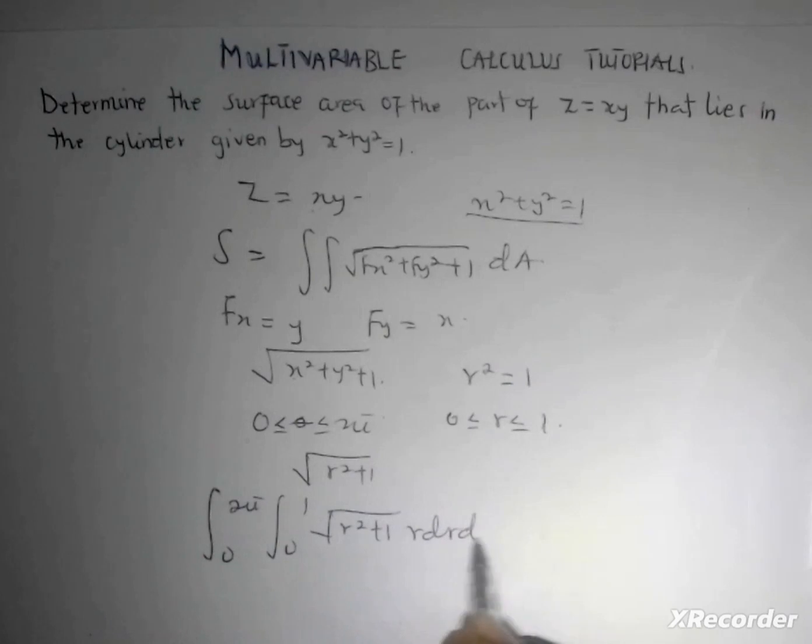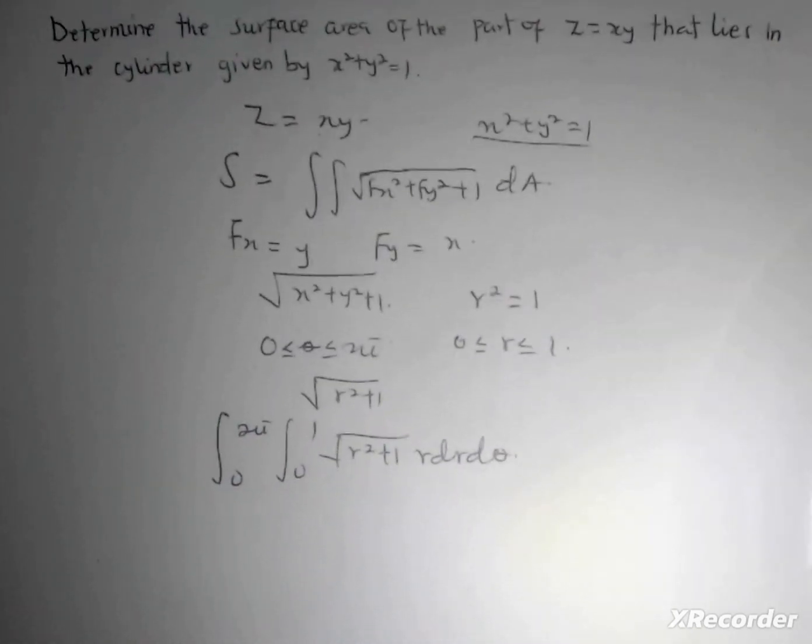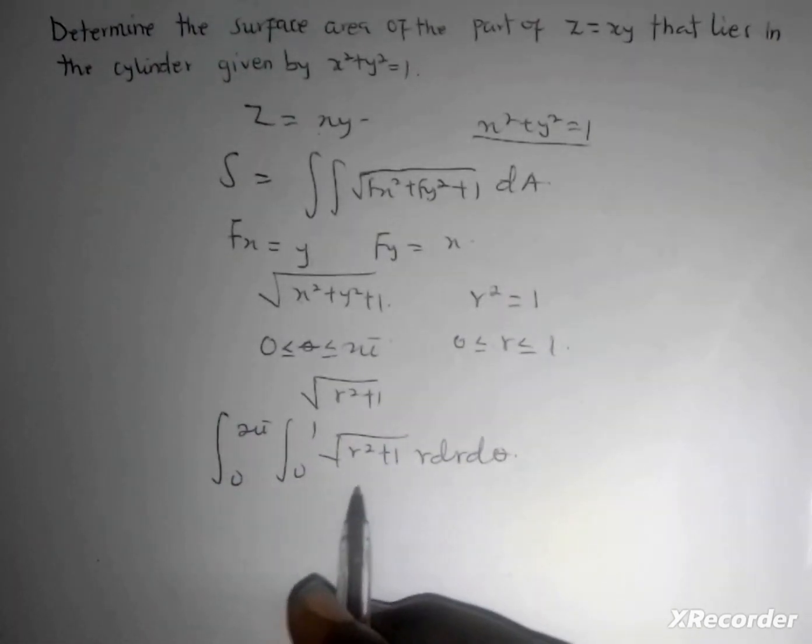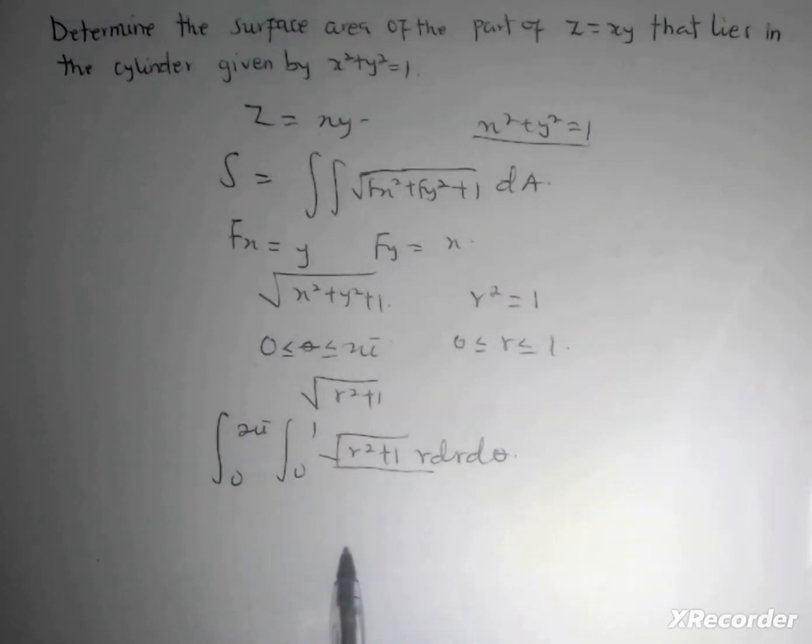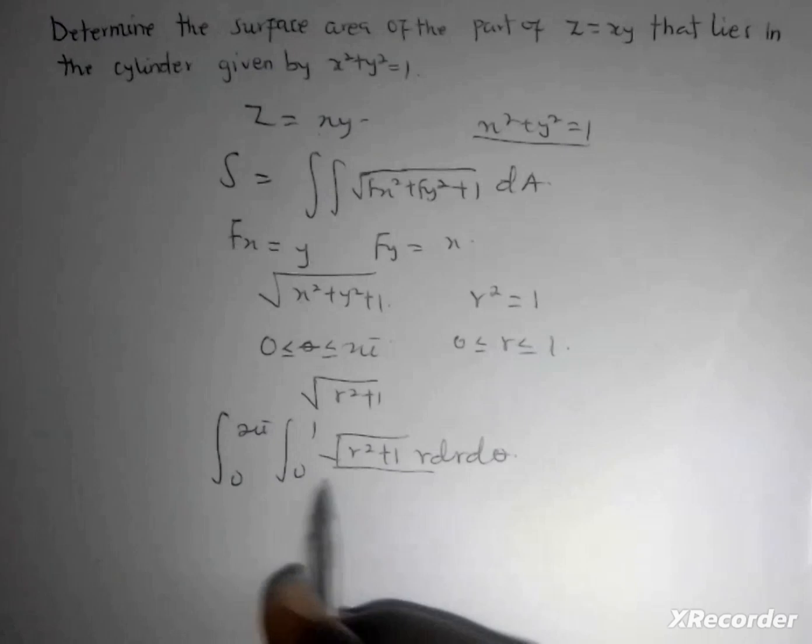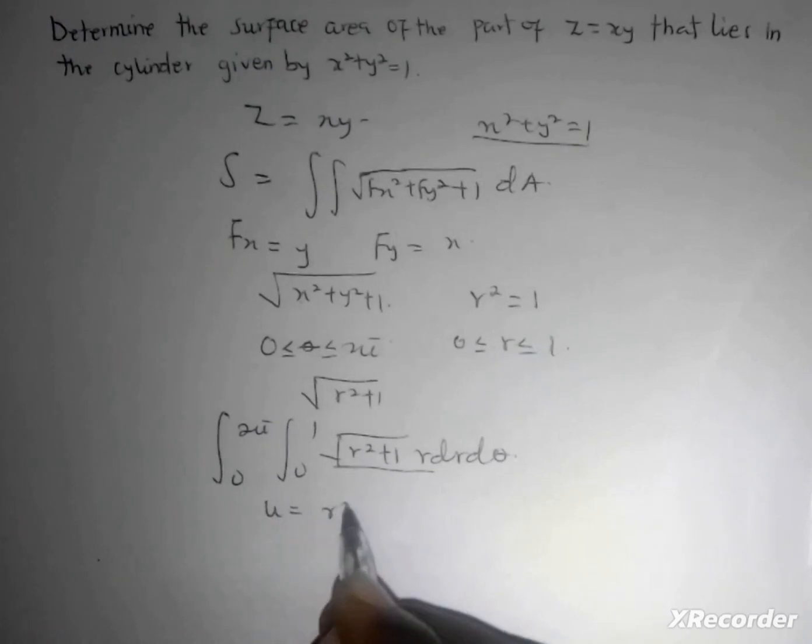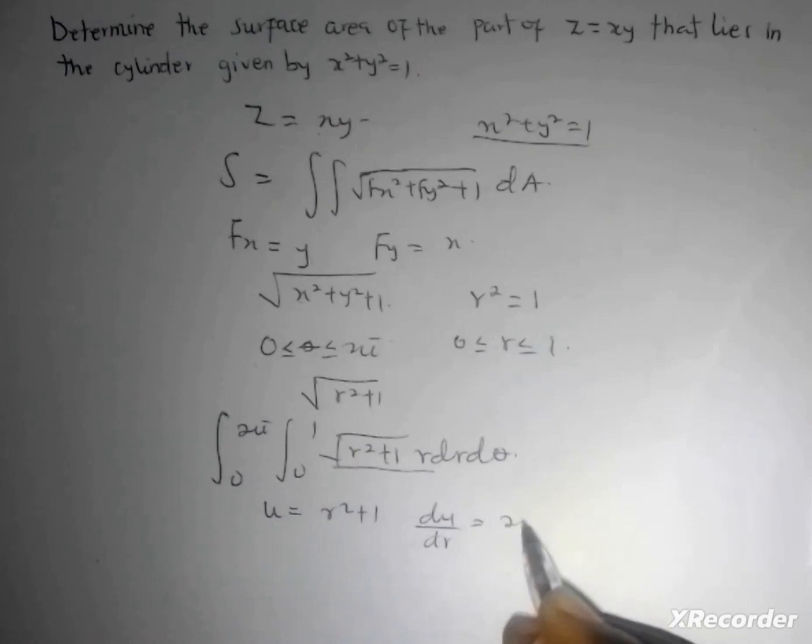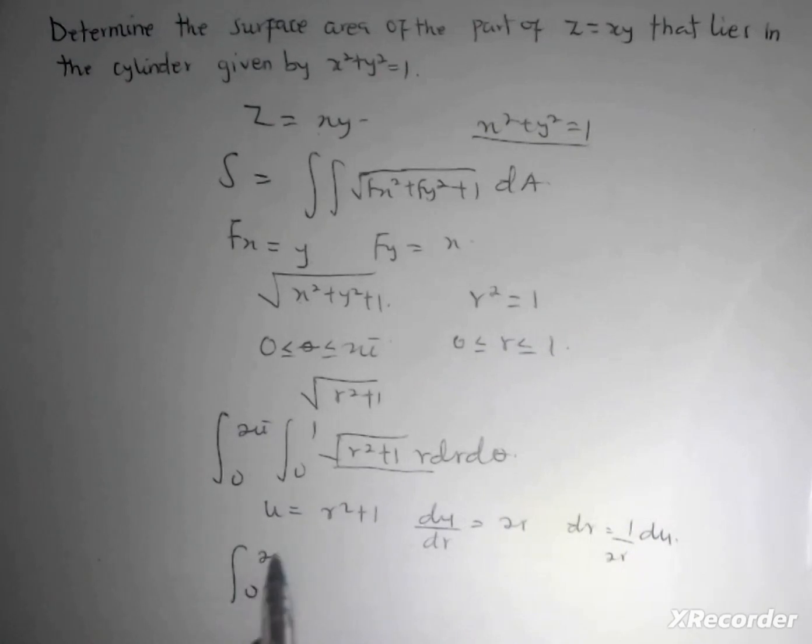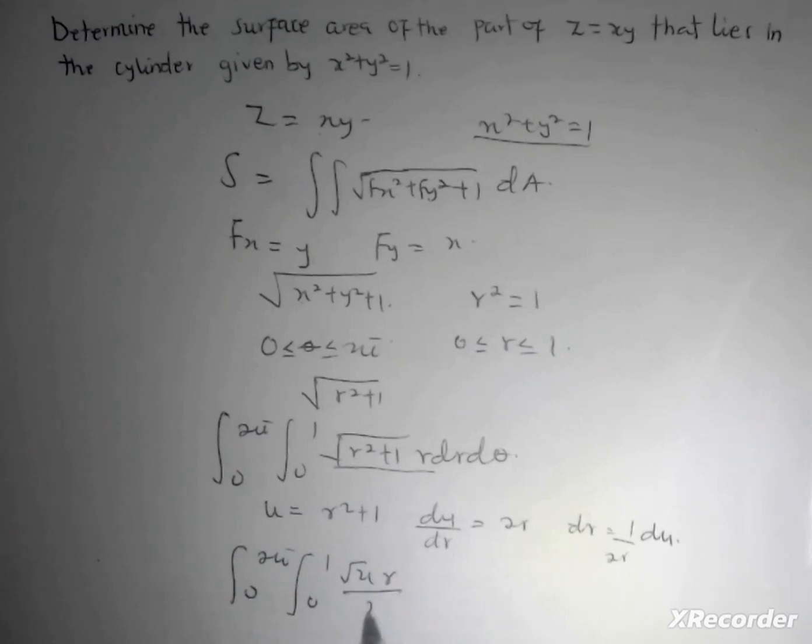At this point I'm going to integrate using substitution. Let u = r² + 1, so du = 2r dr. I'm going to have the integral from 0 to 2π and 0 to 1 of √u times 1/2 du dθ.